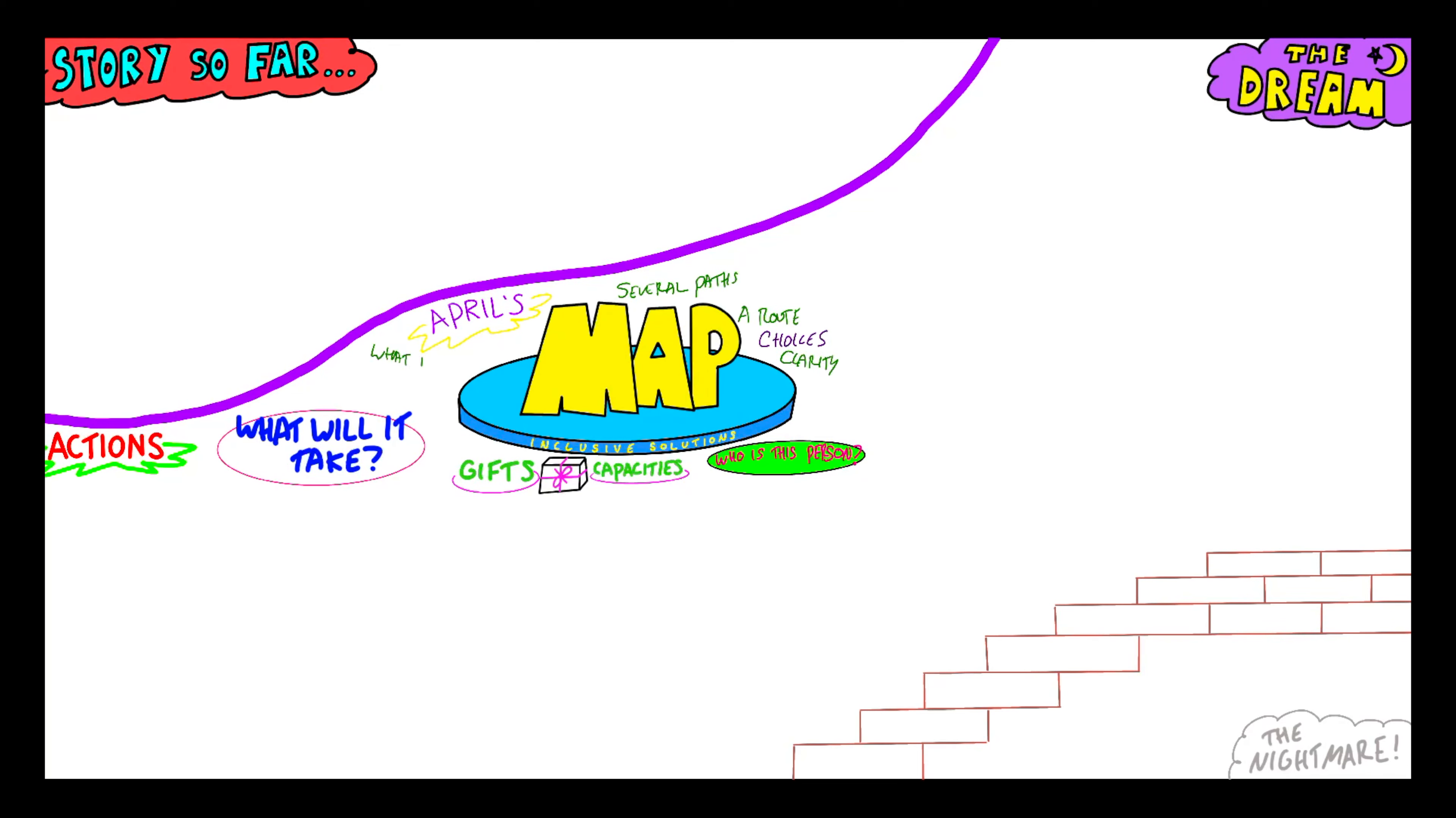Where we're going to start off is what is a map. We're going to define what a map is, run through that really quickly, and then we're going to talk about the story so far.